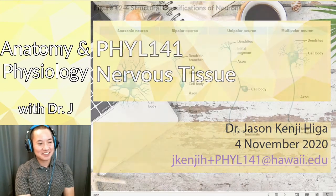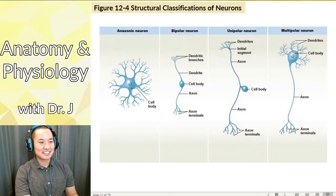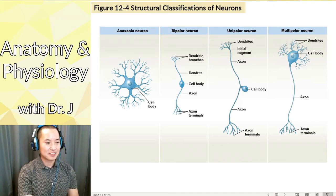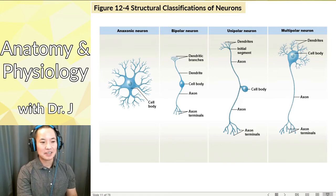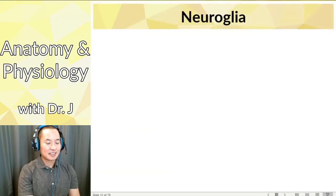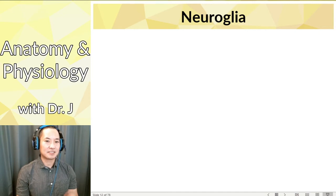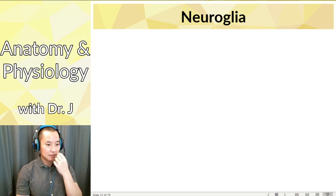We're going to talk about nervous tissue. We left off on the structural classifications of neurons — we talked about anaxonic, bipolar, pseudo-unipolar, and multipolar neurons. Now let's talk about the other category of nervous tissue. You have your neurons, the ones that send those electrical impulses we call action potentials, but also neuroglia.